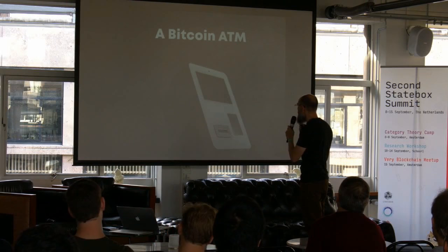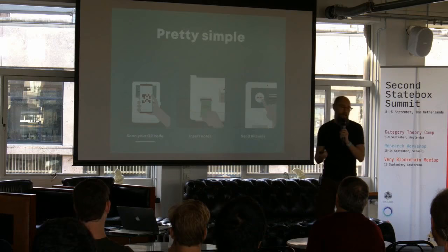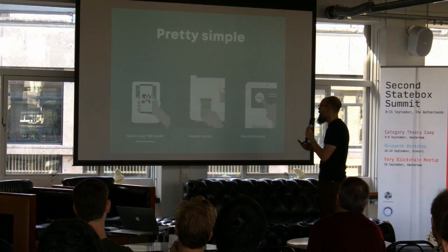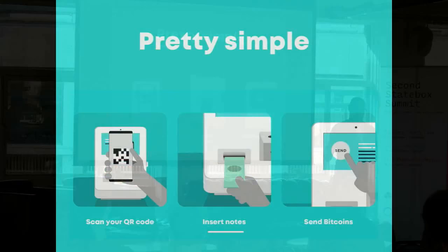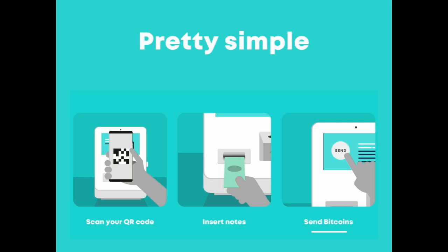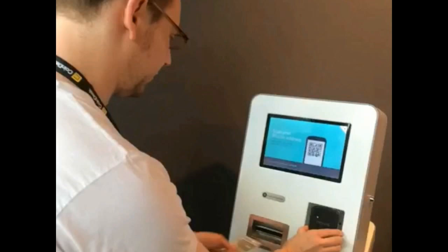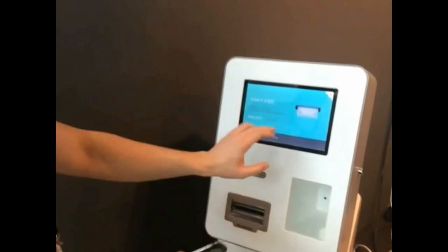This is your phone, which has a Bitcoin wallet on it. It's a QR code machine. You can click the button and it will send you nice, new, shiny Bitcoins to your phone. It's a little quick, five seconds — press the button, boom, got Bitcoins on your phone.